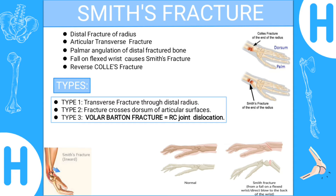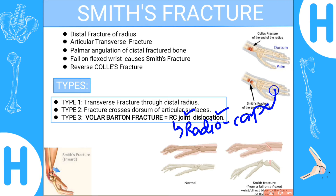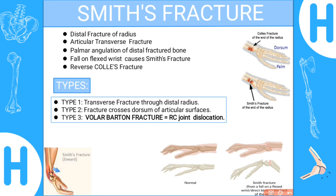Type 3 is referred to as the Volar Barton fracture. In this type, the radiocarpal (RC) joint — the joint between the radius and the carpal bones — is dislocated. Smith's fracture is more dangerous than Colles' fracture because of its direction towards the neurovascular structures.